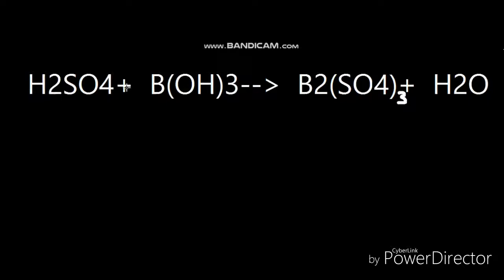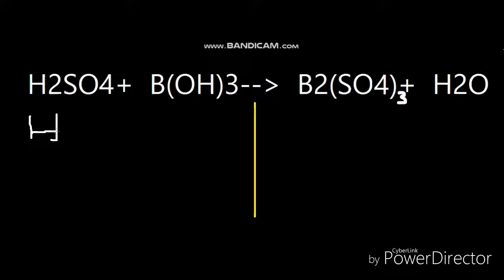At first, we will calculate the number of atoms on each side. We will not only calculate the number of atoms — we will also calculate the number of compounds. So on the reactant side we have a hydrogen atom, a sulfur atom, and oxygen atoms. When this is a compound present on each side, you will see a sulfur here and here on both sides — we have this compound on both sides.